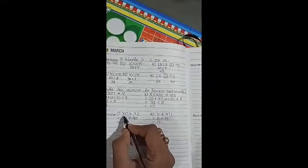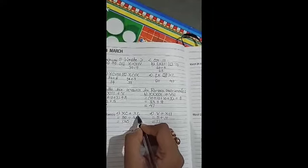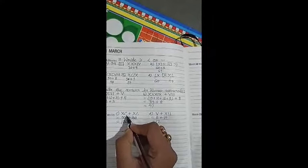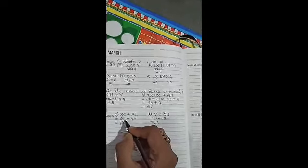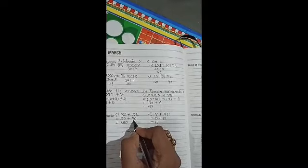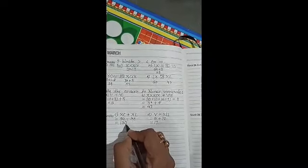C. XC plus XL. XC is 90 and XL means 40. 90 plus 40, 130. Okay?